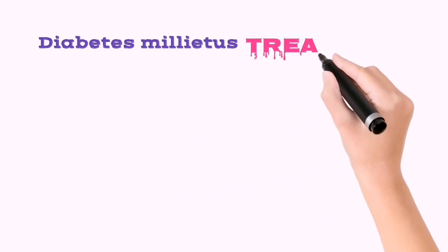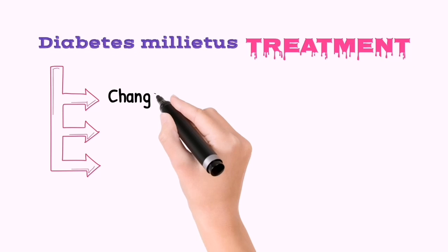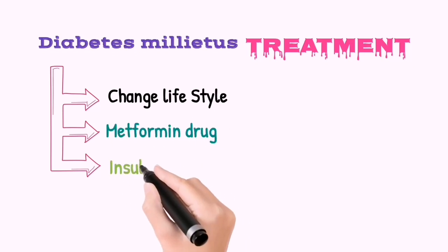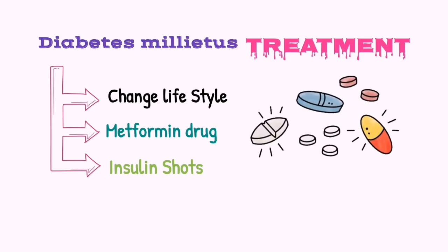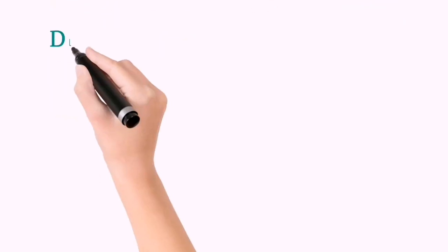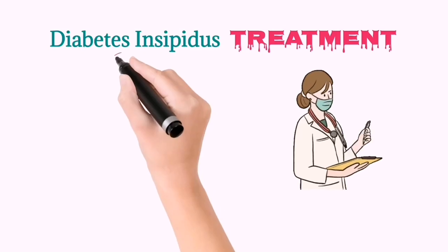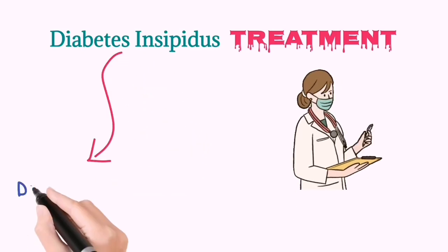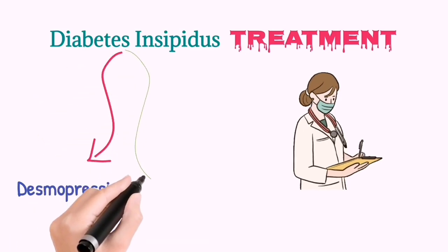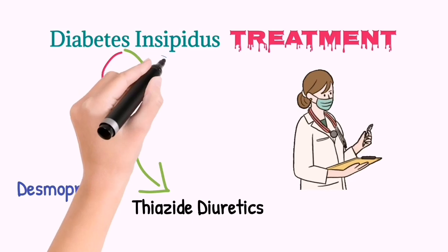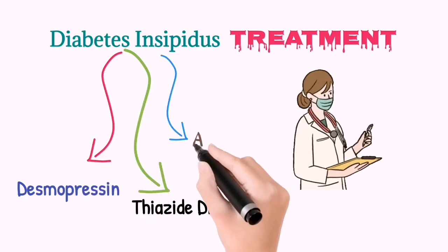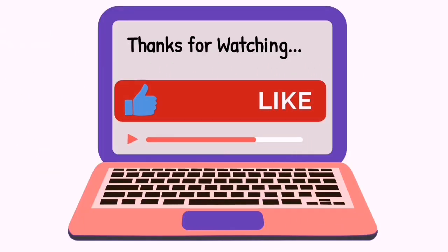If we come across patients like these, how can we treat them? The treatment for diabetes mellitus patients includes lifestyle changes, the drug metformin can be recommended, and insulin therapy can also be advised. For diabetes insipidus patients, a drug like desmopressin should be recommended if the patient has type 1 diabetes insipidus, and if they have type 2 diabetes insipidus, drugs like thiazide diuretics and aspirin are advised. Thanks for watching. Keep tuning in for more informative videos.